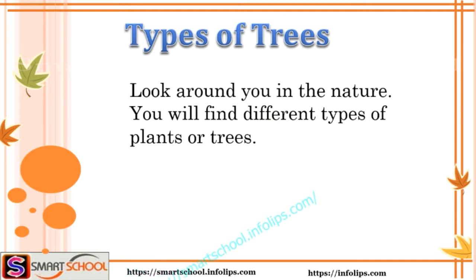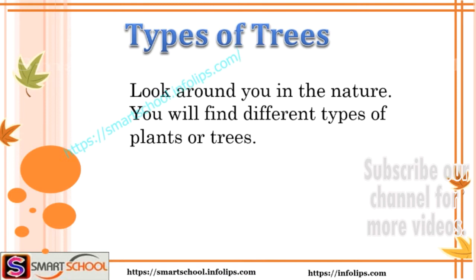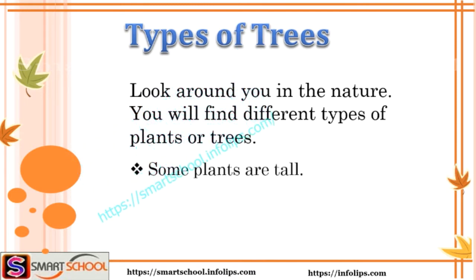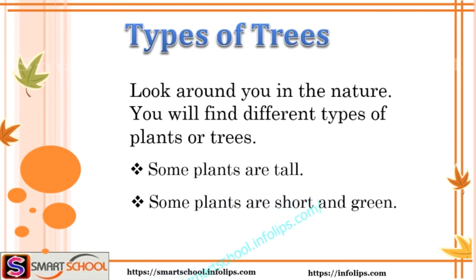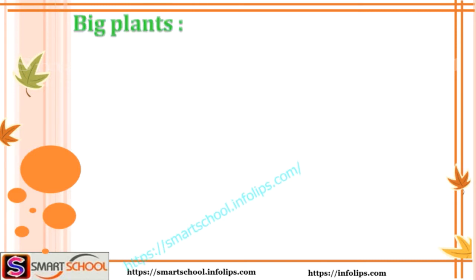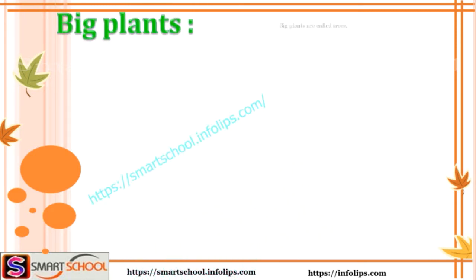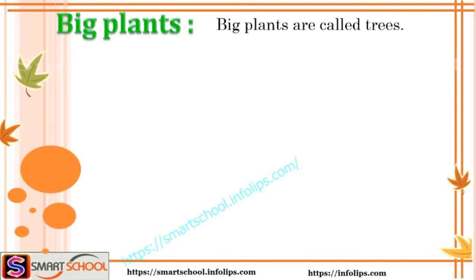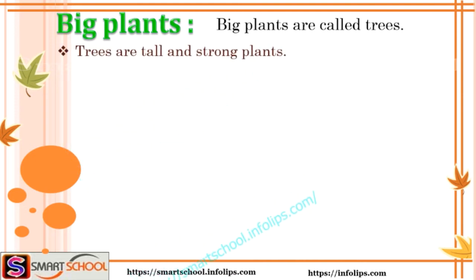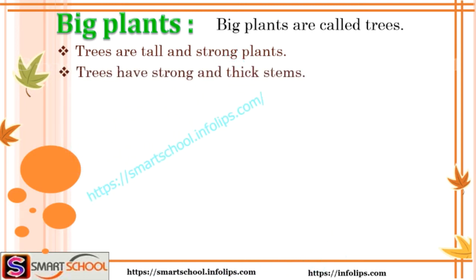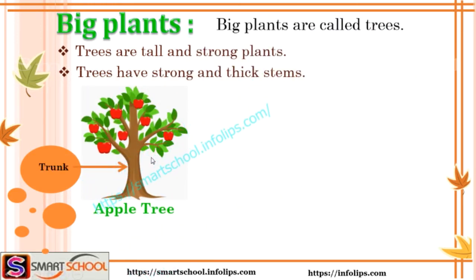You will find different types of plants or trees. Some plants are tall, some plants are short and green. Let's see the types of plants. The first one is big plants. Big plants are called trees. Trees are tall and strong plants, and they have strong and thick stems.